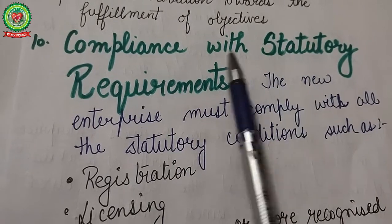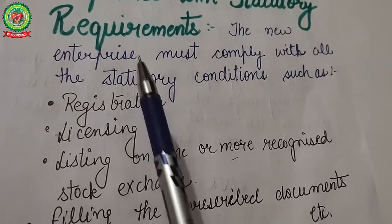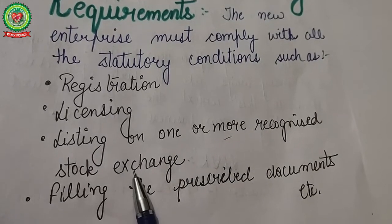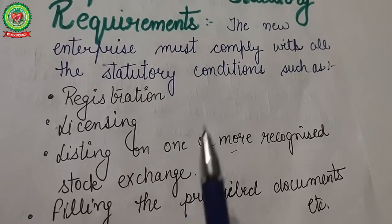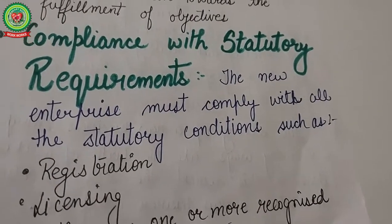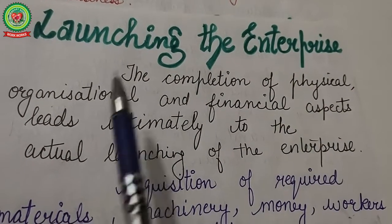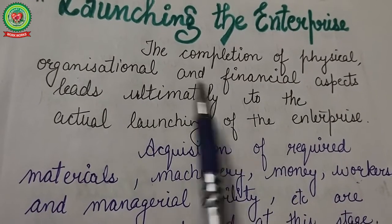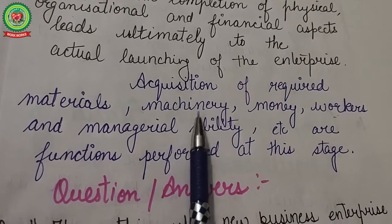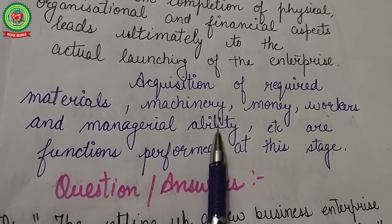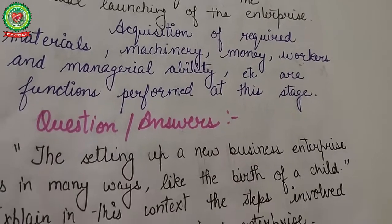The next step is compliance with statutory requirements. The new enterprise must comply with all statutory conditions such as registration, licensing, listing on recognized stock exchanges, filing prescribed documents, and obtaining a no-objection certificate from the pollution control board. The last step is launching the enterprise. The completion of physical, organizational, and financial aspects leads ultimately to the actual launching of the enterprise. Acquisition of required materials, machinery, money, workers, and managerial ability are the functions performed at this stage.